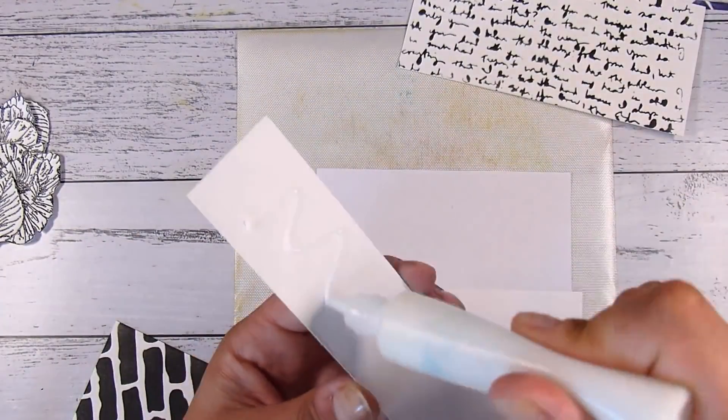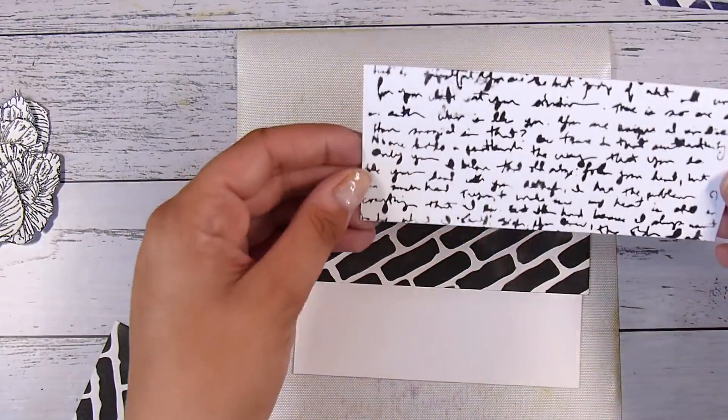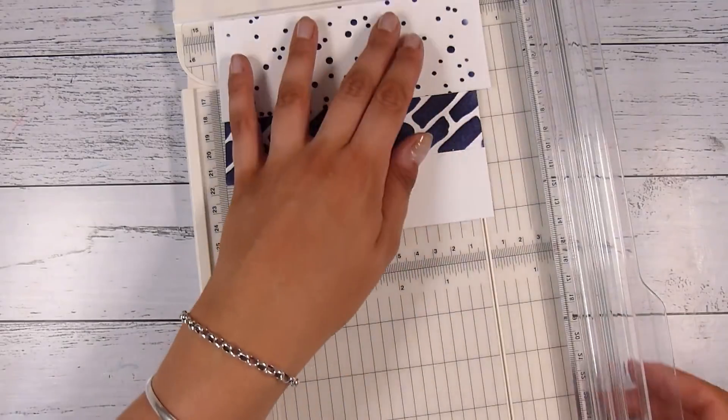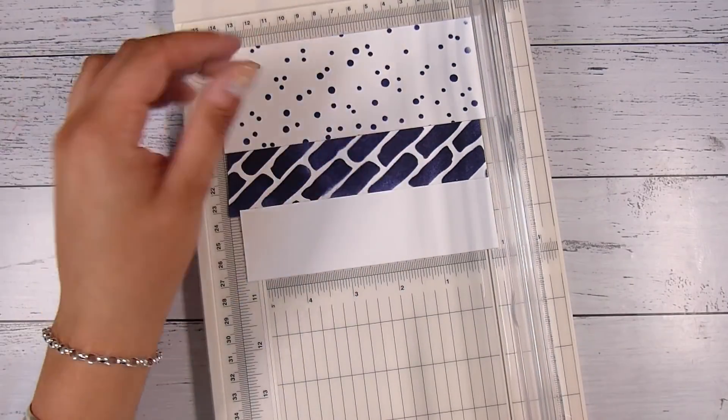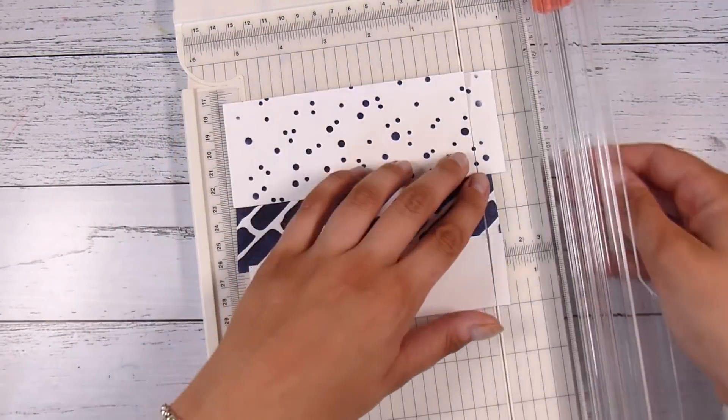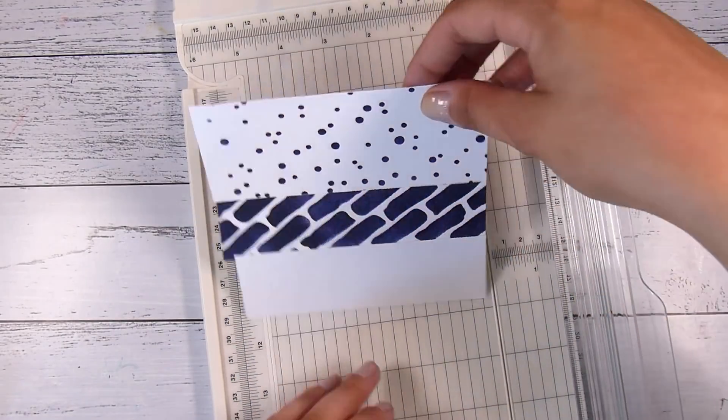Moving on to the black ink card now. I'm going to keep that same brick stencil for the middle, then the plain down the bottom, then I chose to go with the script up the top. I will trim these down so I will be able to use the scraps from these later on.